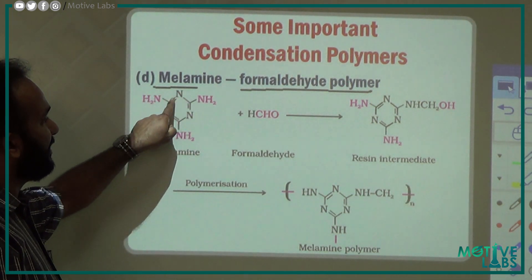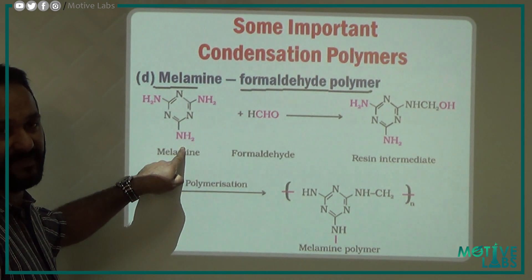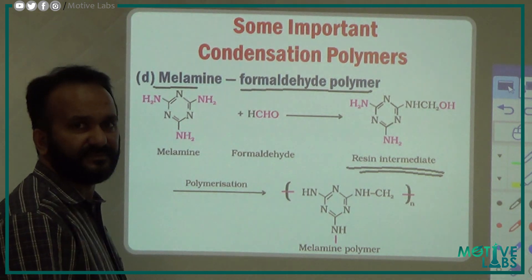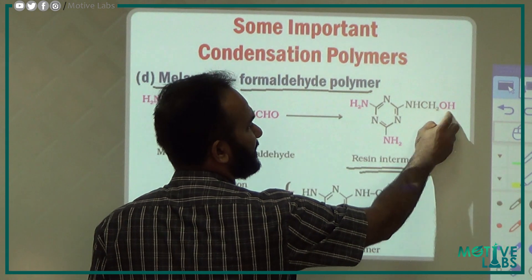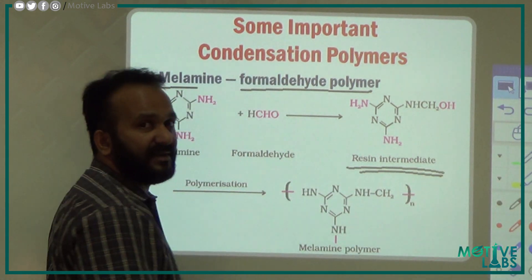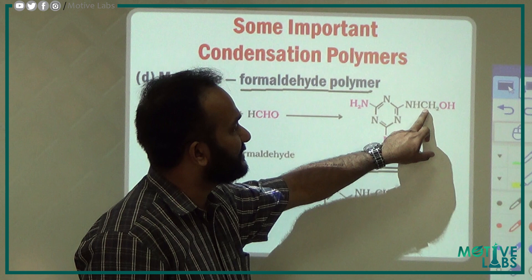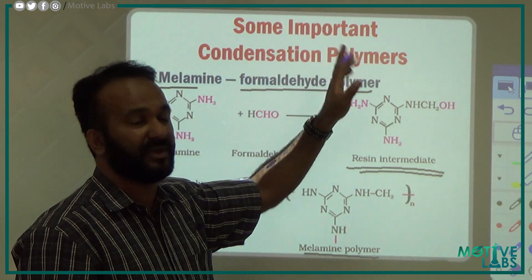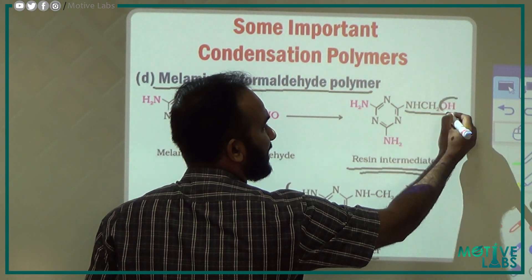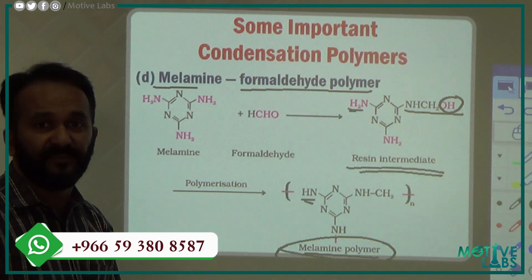The fourth category is melamine formaldehyde polymer. Melamine has a benzene ring with three NH2 groups at its corners. Melamine reacts with formaldehyde (CHO). The intermediate resin formed has NHCH2OH groups. Water molecules are eliminated to form the melamine polymer.